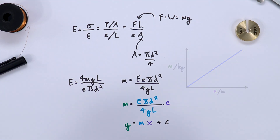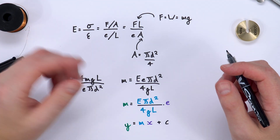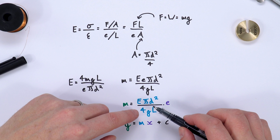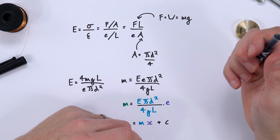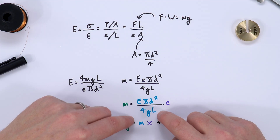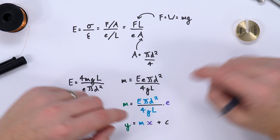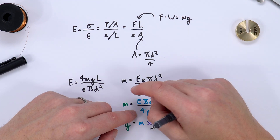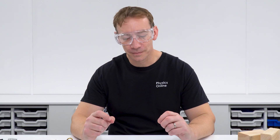If we plot the data and work out the gradient, and we know the diameter of the wire, the starting length, and the gravitational field strength, we can then calculate the Young Modulus of that particular material. So how do we add the mass and measure the extension?